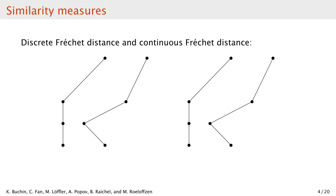We consider different matchings or couplings of the vertices of two curves. We have to match the first points of the curves, then we can jump to the next vertex on the first curve, on the second curve, or on both. We can never go back along the curve. In this example, we start by matching the first points, then go forward on both curves, then only go forward on the first, then again on both, and finally only on the second, so the last points are matched up. The distance for this matching is the bottleneck distance determined by the pair that is furthest away. Discrete Fréchet distance is then such bottleneck for the best possible matching. Continuous Fréchet distance is similar, but considers the matchings over the entire curves, and not just vertices.